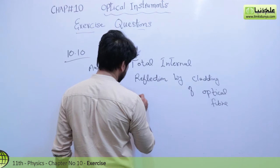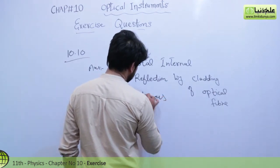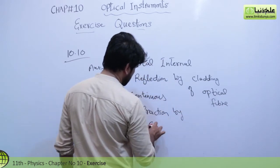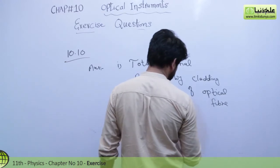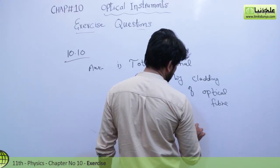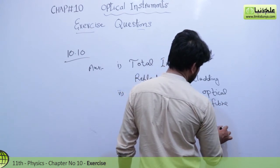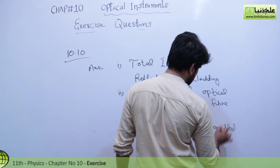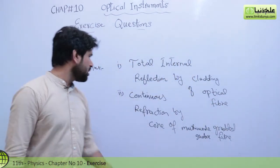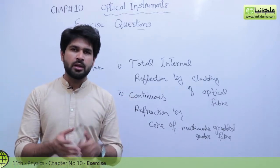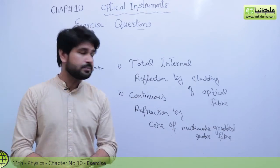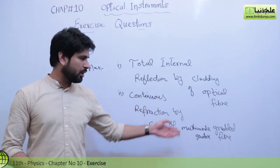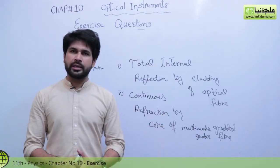The second is continuous refraction by the core of multi mode graded index fiber. So there are two phenomena which are mutually correlated during the transmission through optical fiber: total internal reflection by the cladding, and continuous refraction by the core, which is prominently happening in the multi mode graded index fiber.